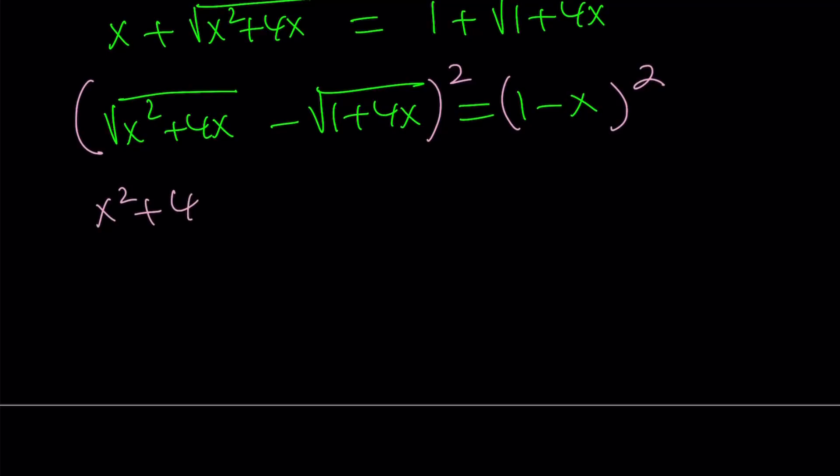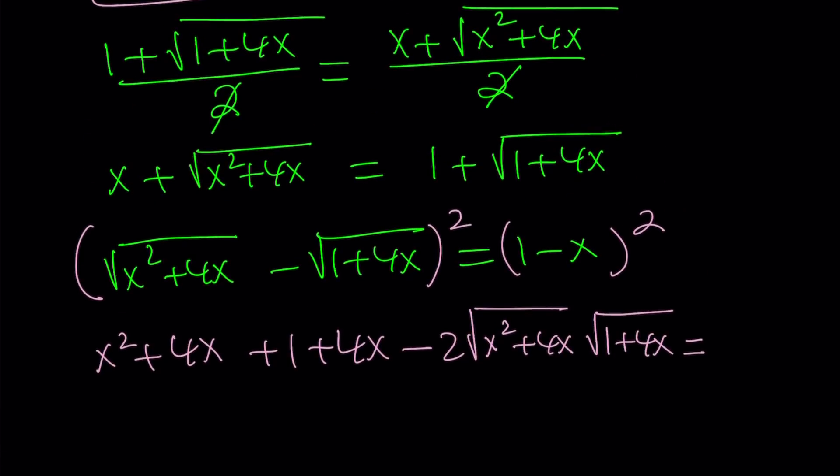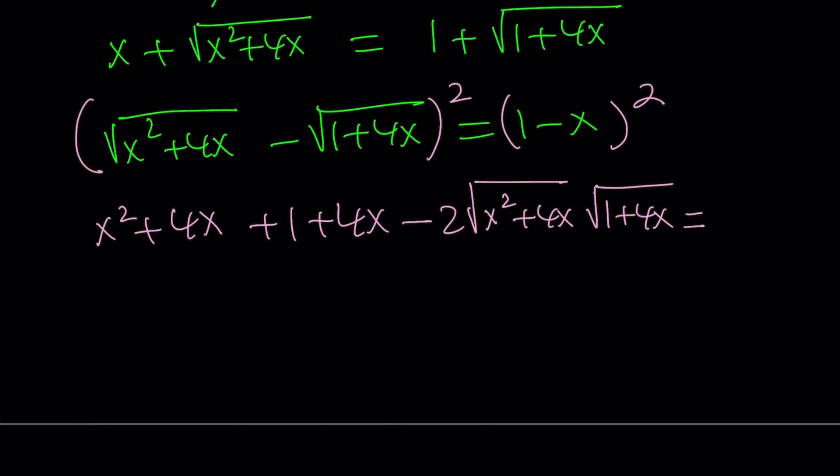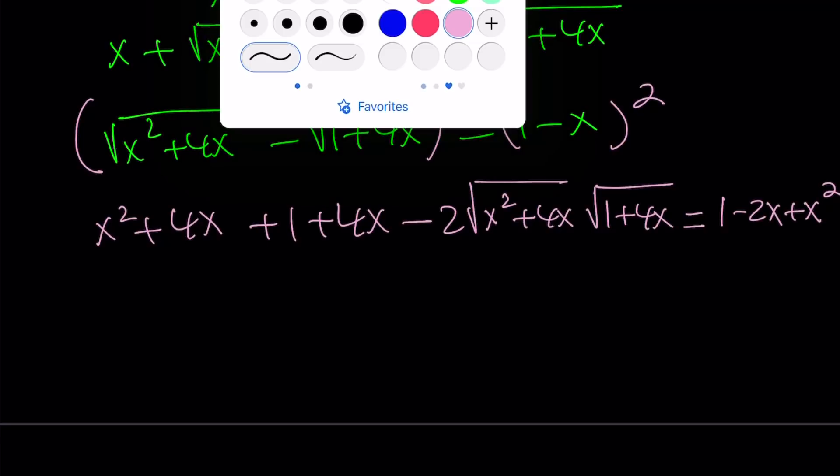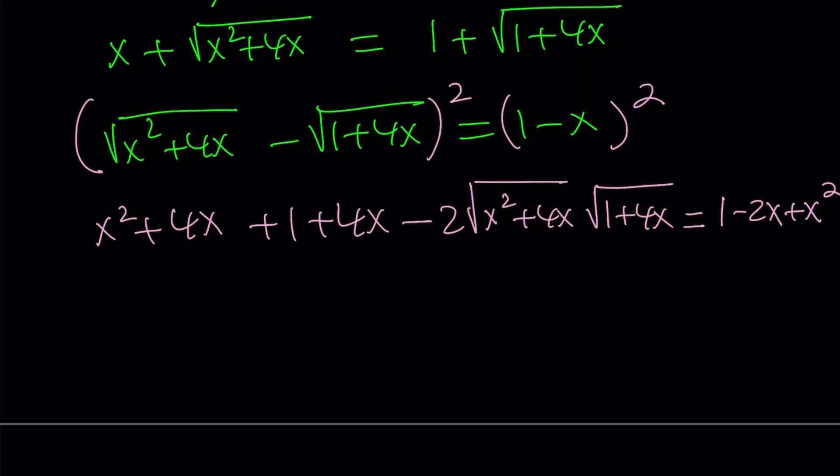We'll get rid of the first radical. And then let's do the second radical. And then minus 2ab. Let's write it last. Two times this times that. I know that kind of looks a little confusing, but don't worry about it. On the right-hand side, we're going to get something real nice. It's going to be 1 minus 2x plus x squared. What's really nice about it is that 1 cancels out and x squared cancels out. Awesome.